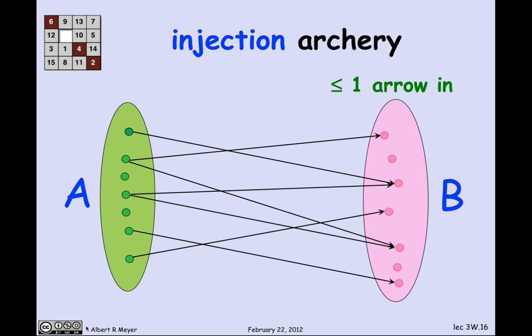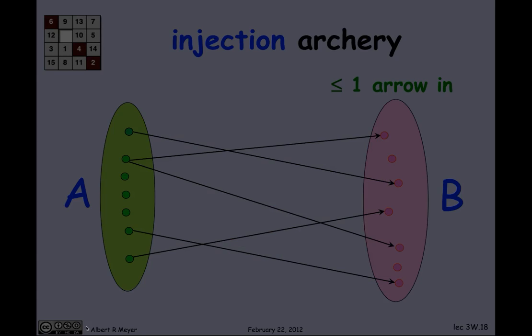An injection is a relation where there is at most one arrow into every element in the codomain. Looking at this picture, it's not quite an injection because there are at least two codomain points that have more than one arrow coming into them. After deleting those extra edges, we're left with a situation where everything in B has at most one arrow coming in — that's an injection.